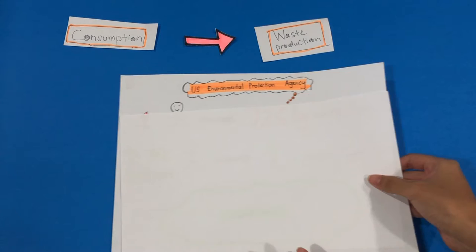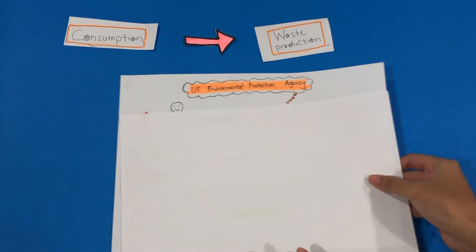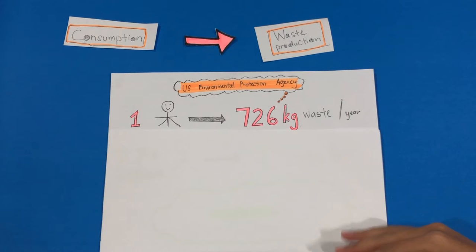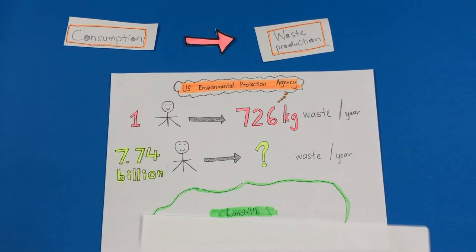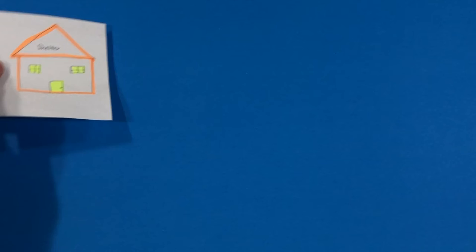Furthermore, consumption is usually followed by waste production. According to the US Environmental Protection Agency, an average American produces about 726 kg of waste a year. Imagine multiplying that number with 7.74 billion. The waste will somehow end up in landfills where it will lay idle awaiting decomposition.